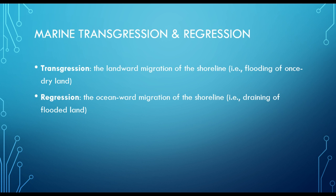A regression would be the oceanward migration of the shoreline. This would be the shoreline moving out, or draining out, so the land is no longer flooded.